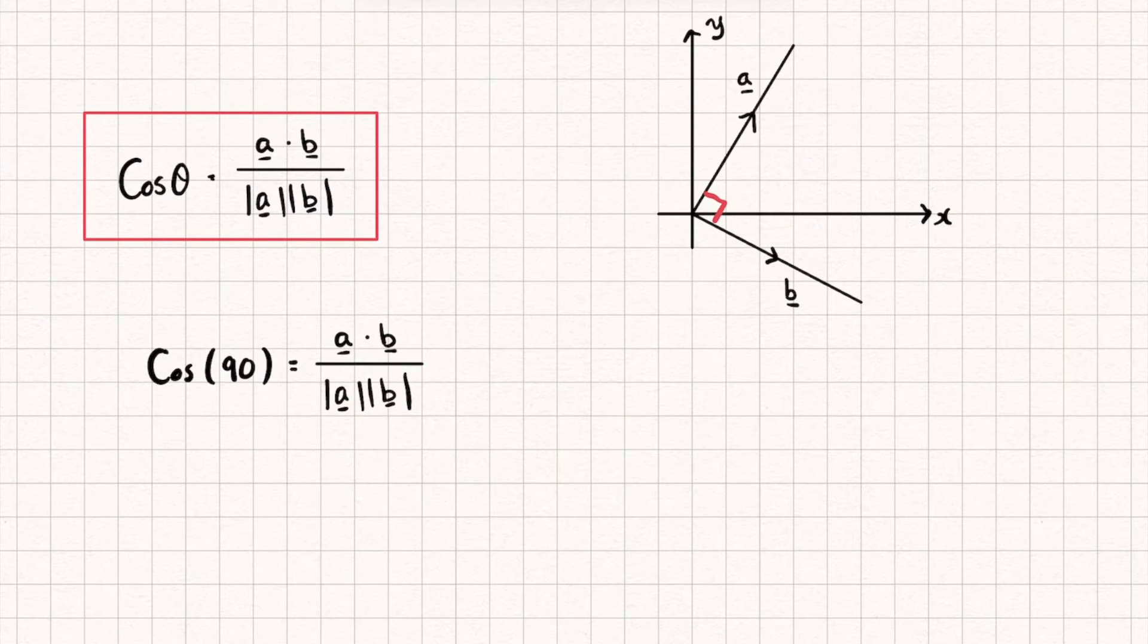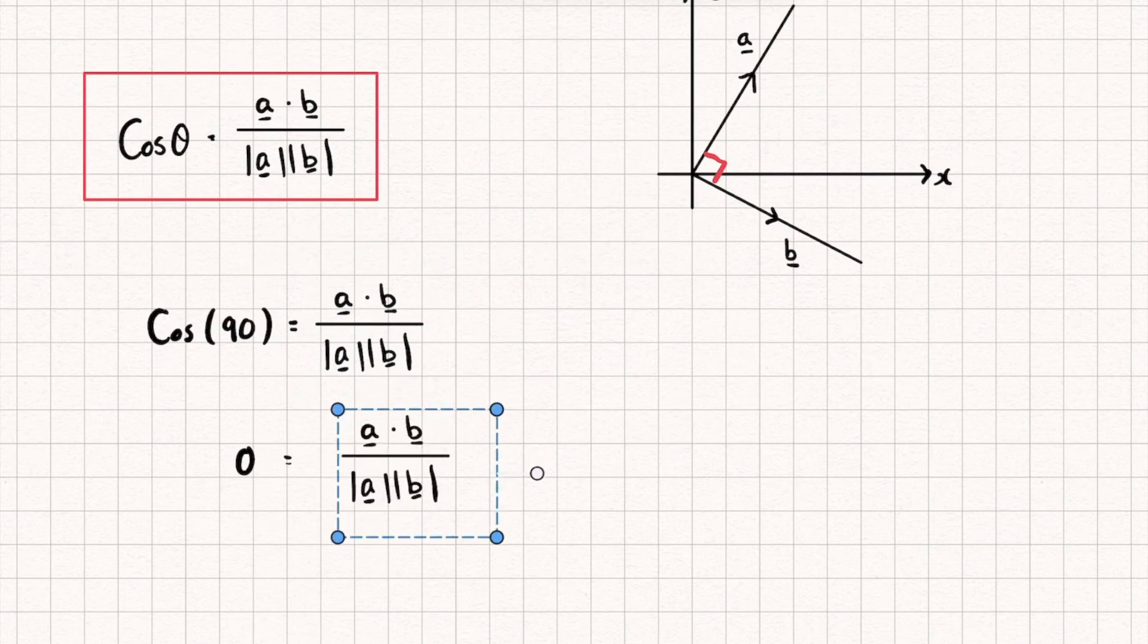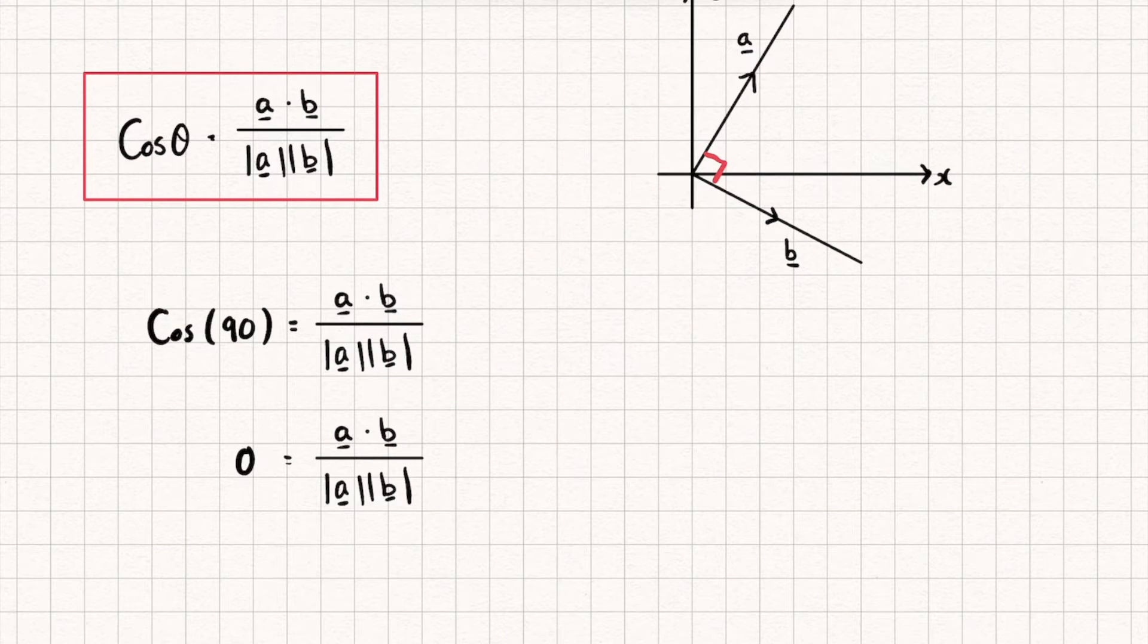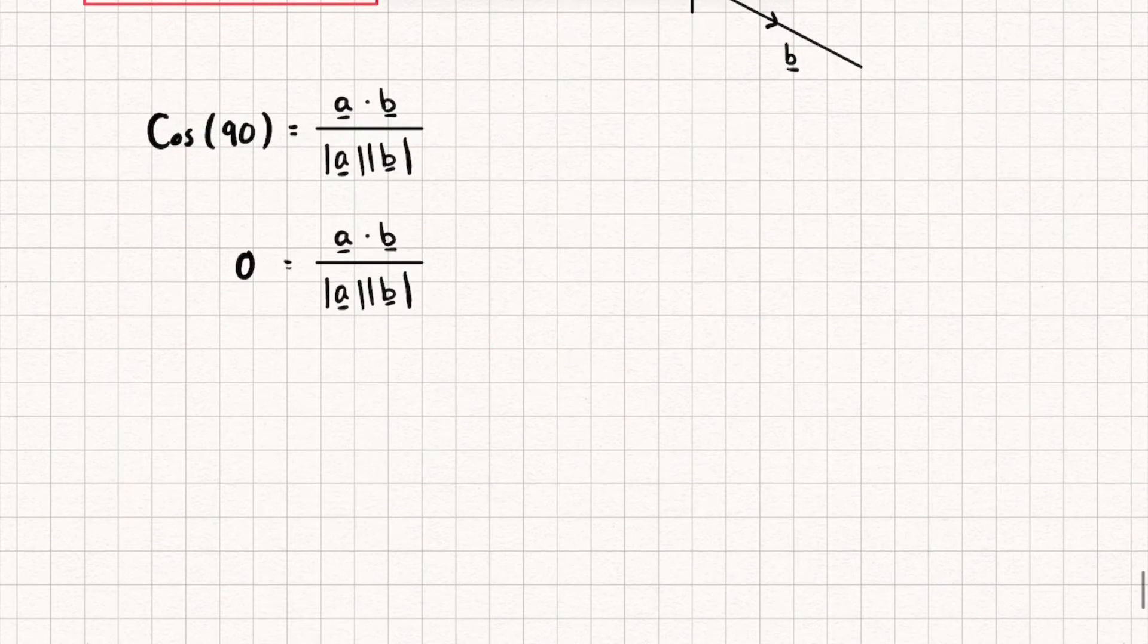Well, what is cosine of 90? That's just equal to zero. So now we have zero is equal to the right hand side of our equation, and when is this right hand side equal to zero? Well, it doesn't matter what the denominator is equal to, the only thing that's going to make this zero really is when the numerator is equal to zero.